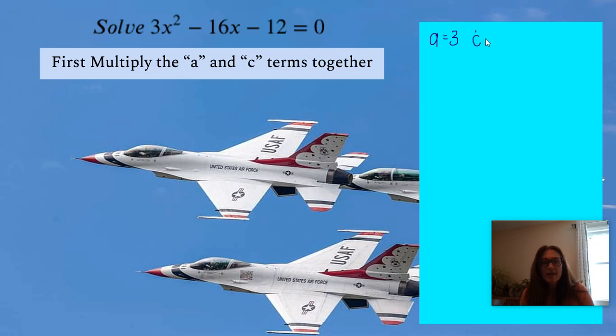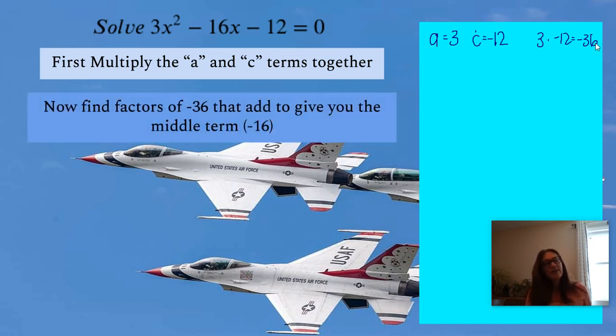And my c term is the constant term, which is negative 12. So we're going to multiply those two together. So we're going to get negative 36. So now we're going to find factors of negative 36 that add to give us our middle term of negative 16.